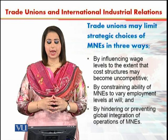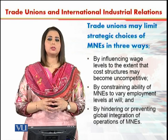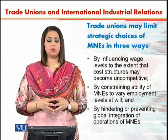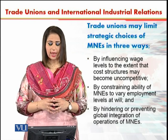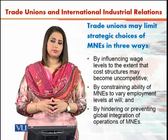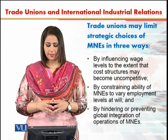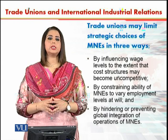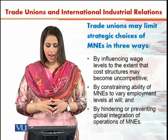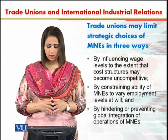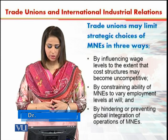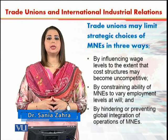Trade unions may limit the strategic choices of multinational enterprises in three ways: number one, by influencing wage levels to the extent that cost structures may become uncompetitive; number two, by constraining the ability of the multinational to vary employment levels at will; and number three, by hindering or preventing global integration of operations of multinational enterprises.